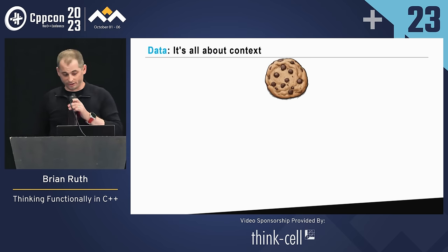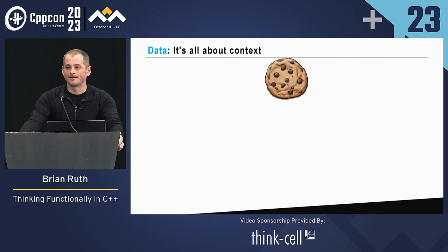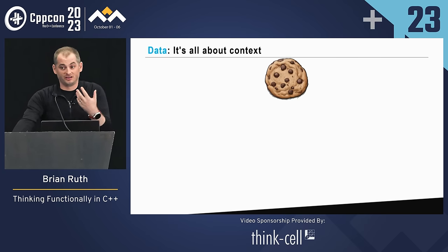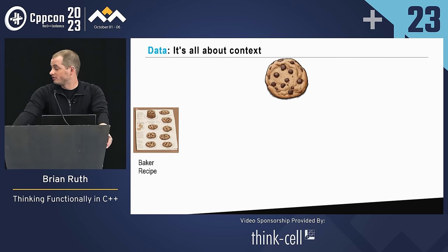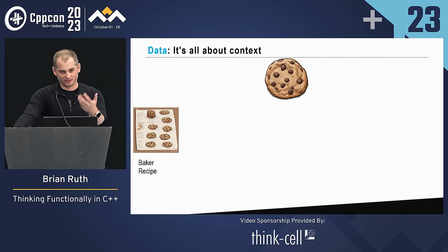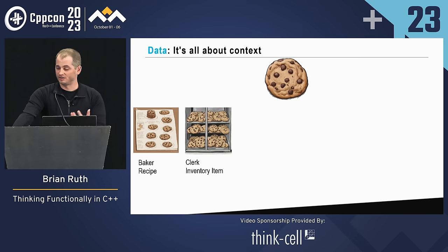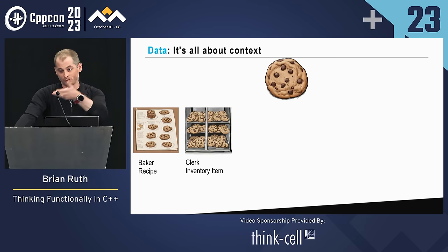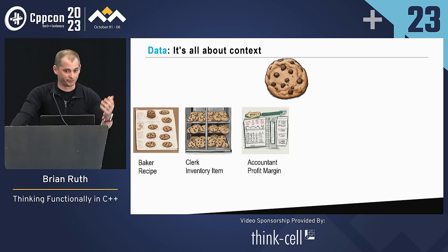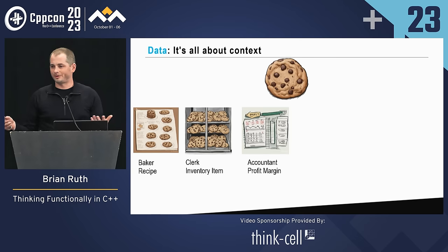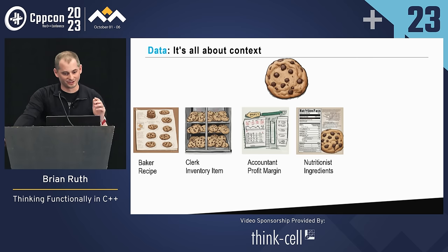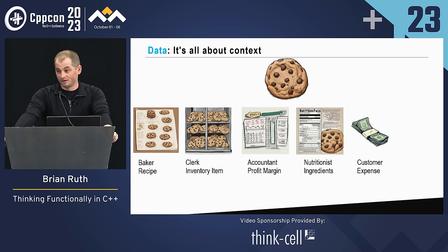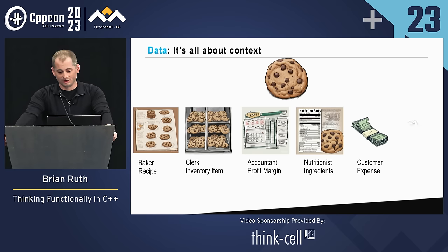Data is all about context. On the screen I've got a cookie — it represents data. It's got a recipe, ingredients, and a process to create it, and it depends on who's looking at it as to how that data can be interpreted. For a baker, ingredients are quantities and processes. For a clerk, the cookie is an individual object with a quantity. For an accountant, it becomes a profit margin calculation. For a nutritionist, it's calories and sodium. For the customer, it's an expense. And for a monster, it's food.